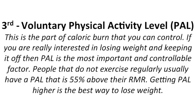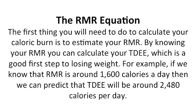People that do not exercise regularly usually have a PAL that is 55% above their RMR. Getting PAL higher is the best way to lose weight. The first thing you will need to do to calculate your caloric burn is to estimate your RMR. By knowing your RMR, you can calculate your TDEE, which is a good first step to losing weight. For example, if we know that RMR is around 1,600 calories a day, then we can predict that TDEE will be around 2,480 calories per day.